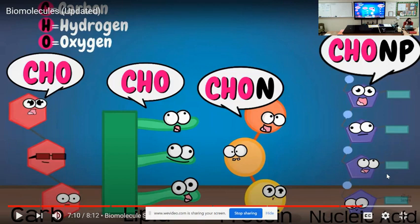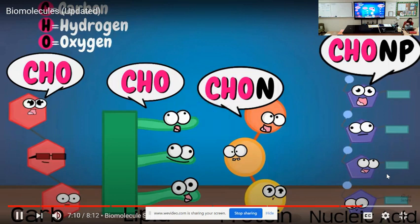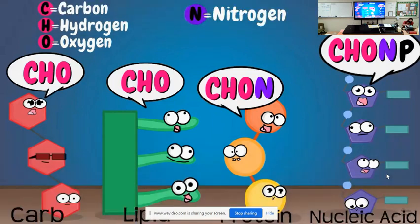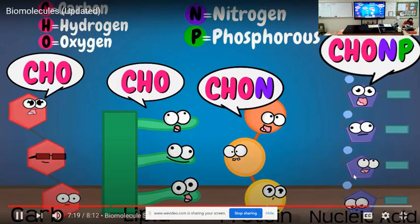All four biomolecules are made with those three main elements: carbon, hydrogen, and oxygen. It's just that proteins and nucleic acids also have an N, which is nitrogen. Nucleic acids traditionally also have a P, which stands for phosphorus. So proteins and nucleic acids add the N element for nitrogen, and nucleic acids continue with one final element, phosphorus.